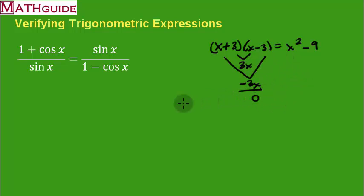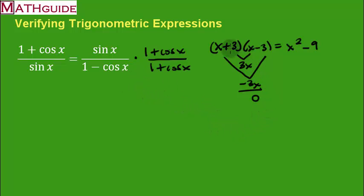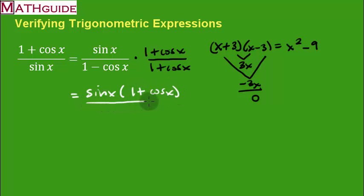I'm going to make use of that property by multiplying the expression by one plus cosine x over one plus cosine x — top and bottom. People don't usually realize why this step is employed, but it's because of that difference-of-squares property. In the numerator not much changes; in the denominator, multiplying those two factors gives one minus cosine squared x, with no middle term.